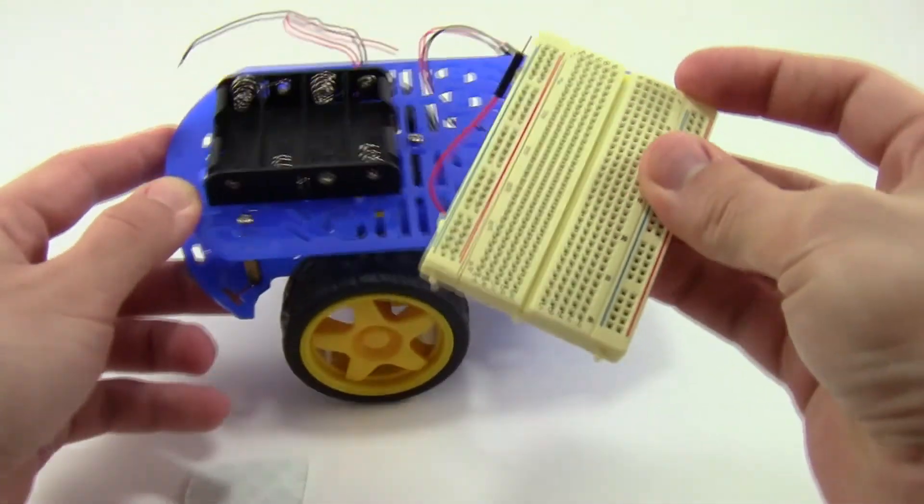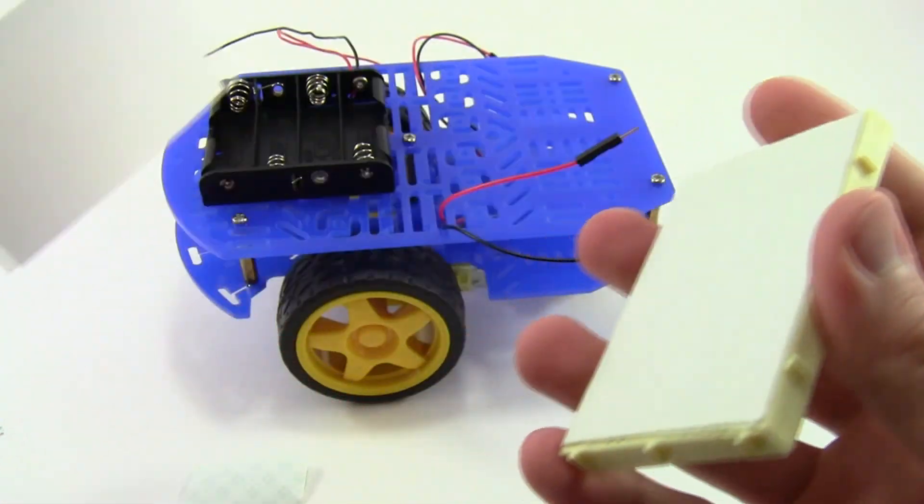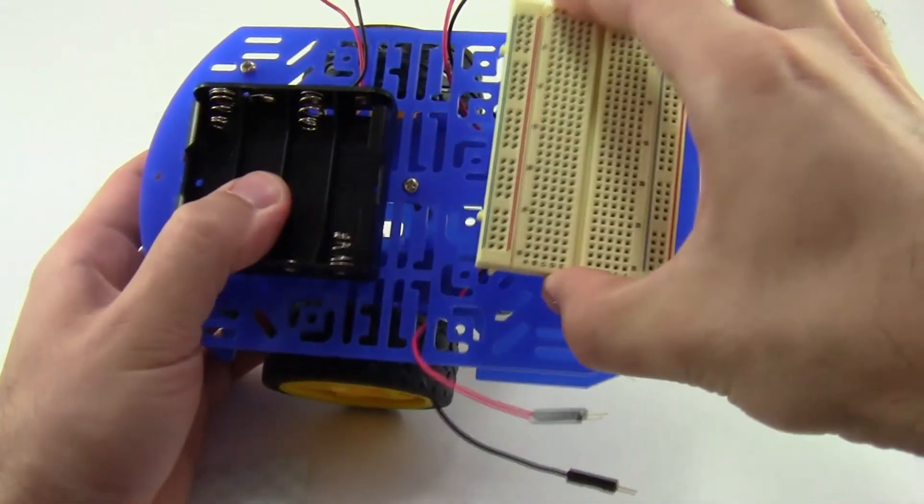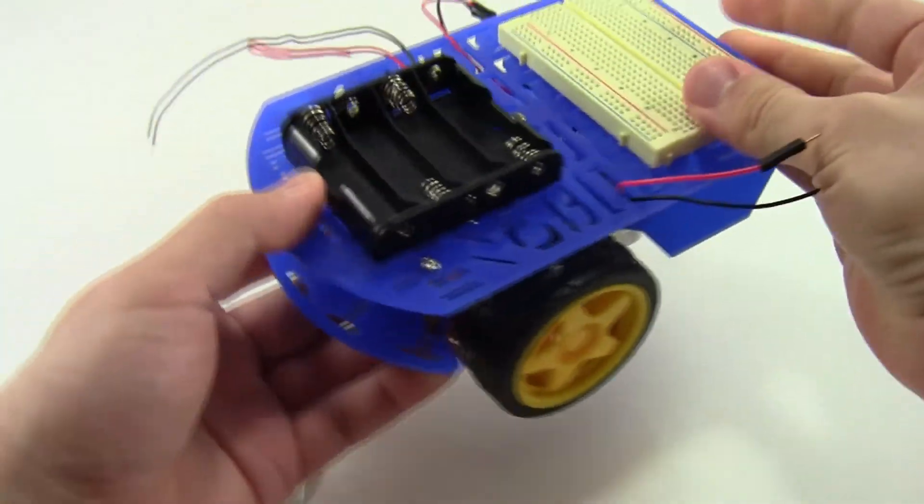So now you can just go ahead and peel off the protective paper backing, press the breadboard down firmly onto the top of the chassis so it sticks, and then you are all set. You have finished assembling your chassis and you are ready to build your first robot. Have fun!